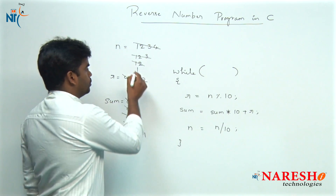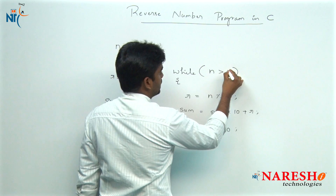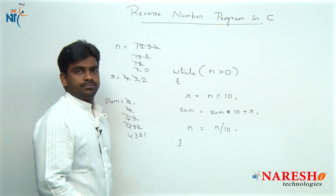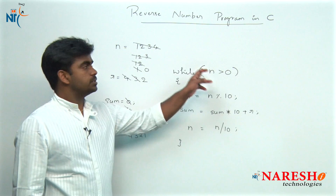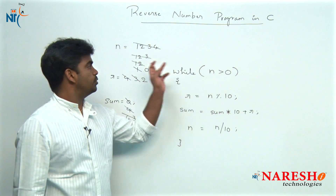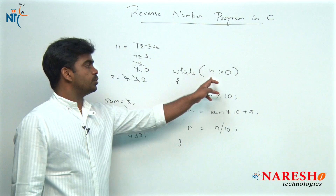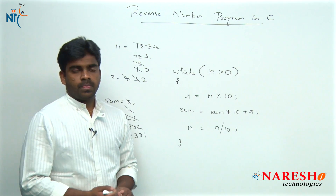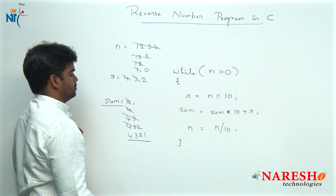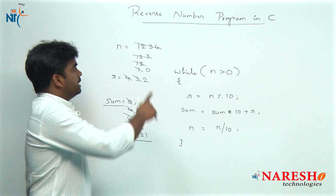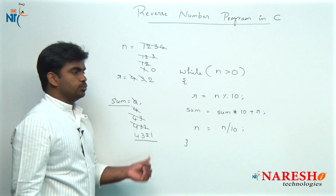Whenever N value is 0 we should stop. If N value is greater than 0 you can continue. So these many times it will repeat: 1234 greater than 0, 123 greater than 0, 12 greater than 0, 1 greater than 0. Finally whenever 0 is greater than 0, it terminates. The sum contains the reverse number. The given number is 1234 and the reverse number is 4321.